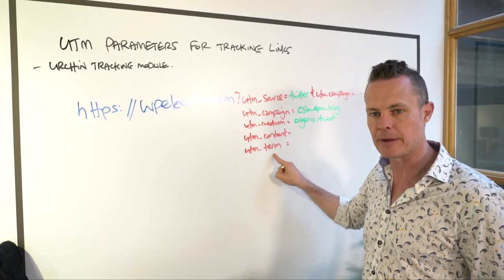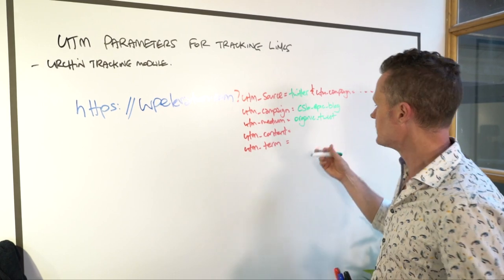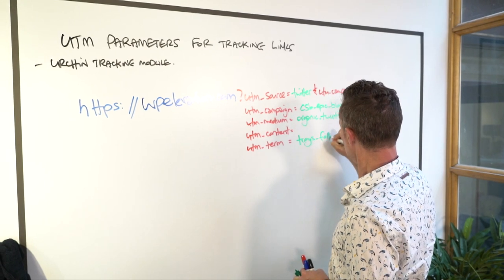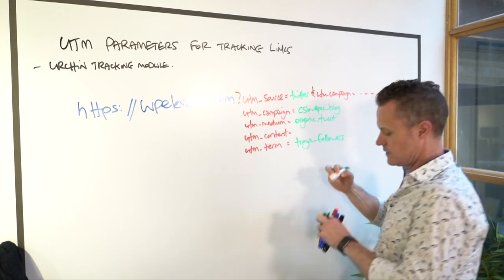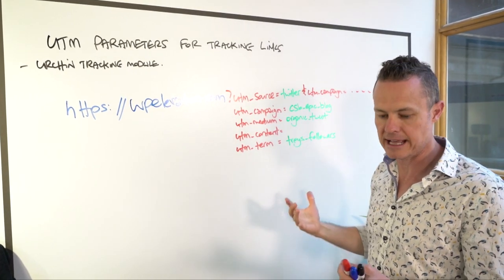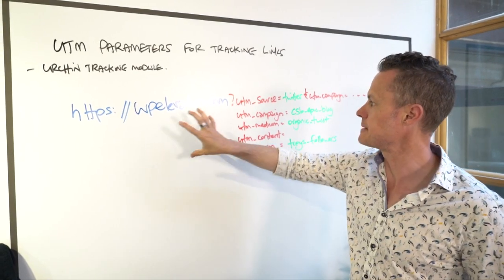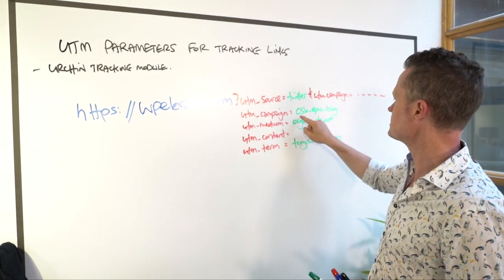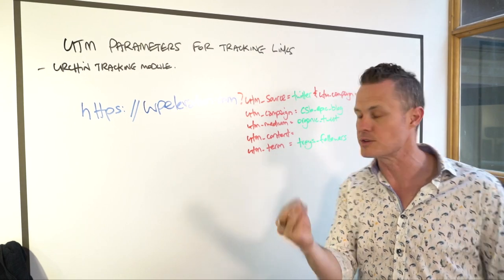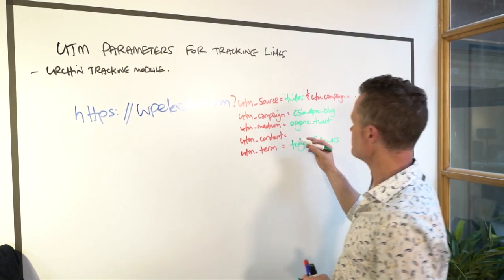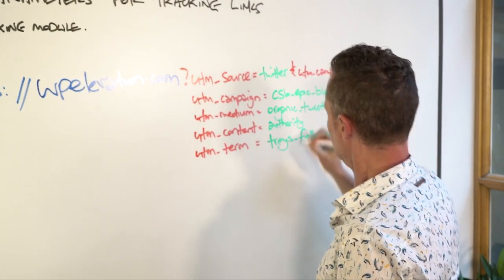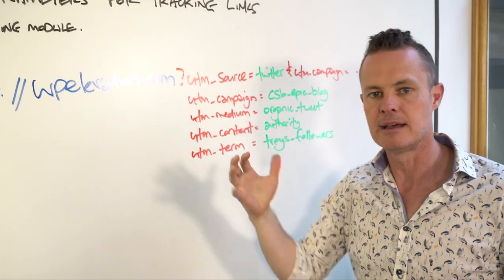Term is either the keyword that you're going after or the audience that you're promoting it to. In this case, this could be Troy's followers. Content is how you differentiate this particular tweet from any other tweet that you're sending to the same URL. For example, I'm sending people to the content strategy blueprint epic blog, but I might tweet three or four different nuggets from that blog post. So in this case it might be 'authority,' because that's one of the pieces in the epic blog post.